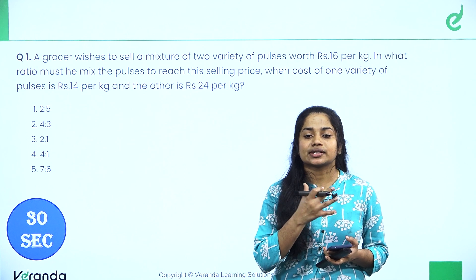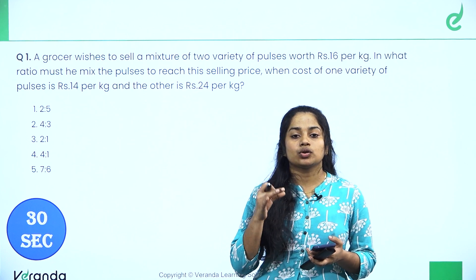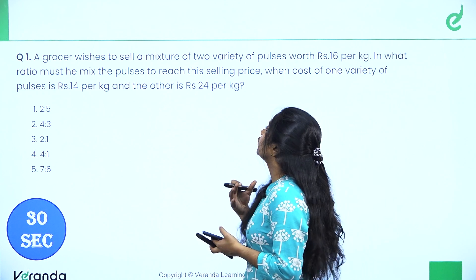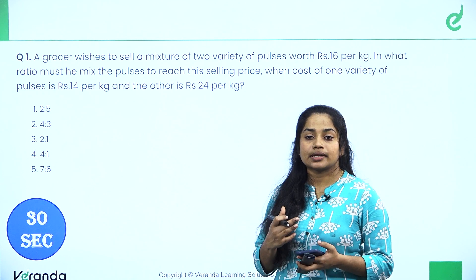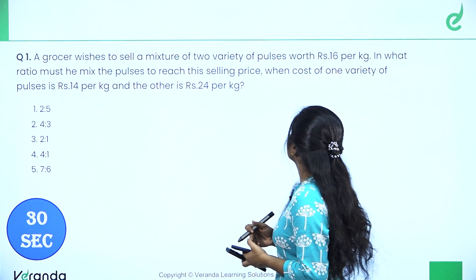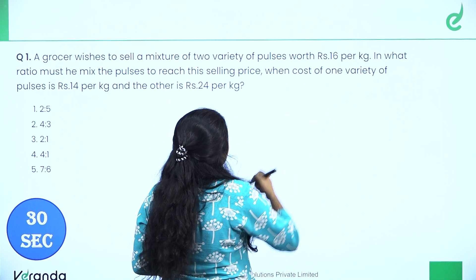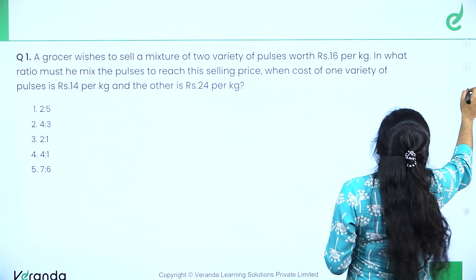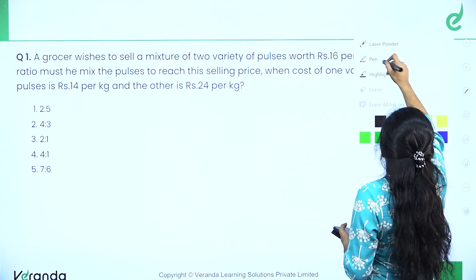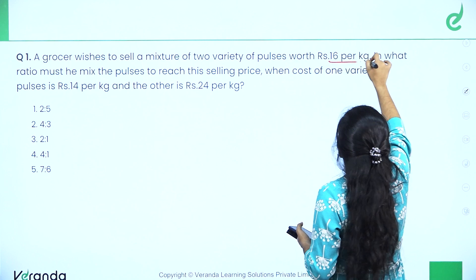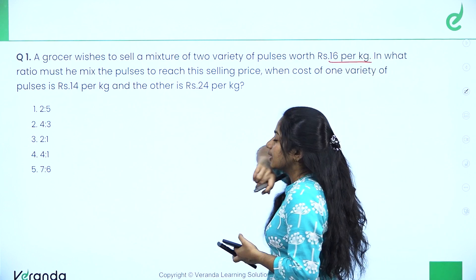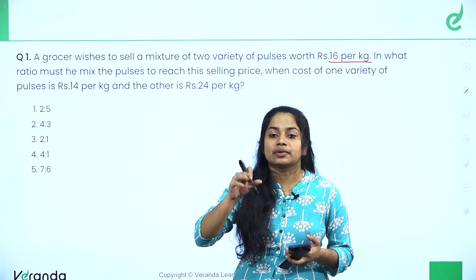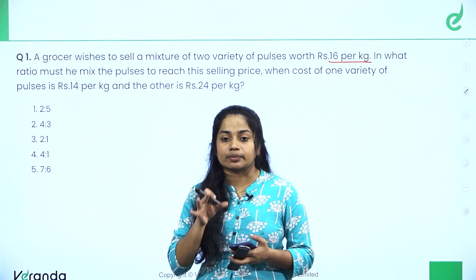This question will be simple to solve. In a grocery shop, there are two varieties of pulses. We have to combine them at a rate of 16 rupees per kilogram. We can mix these pulses in any ratio. We have to find the ratio to sell at the same rate.